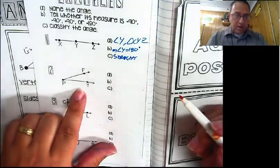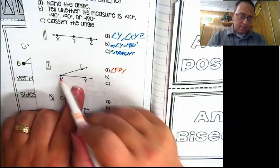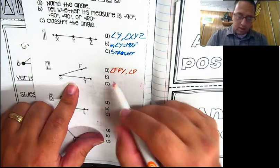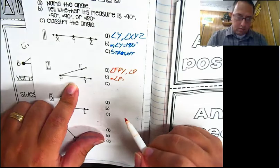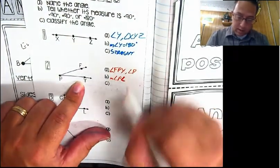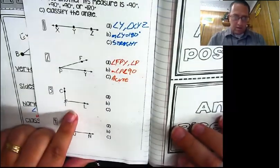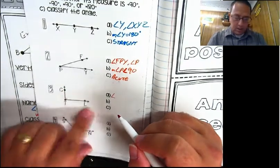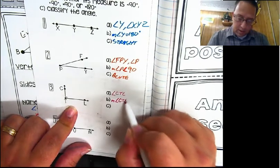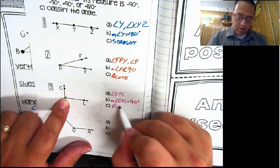Number 2: I could name this angle FPY - one side, vertex, other side. I could also call it angle P, since that's the only angle there. The measure of angle P is clearly smaller than a right angle, so it is less than 90 degrees - making it an acute angle. Next: angle CTL, or since it's the only angle, angle C. It has the little box, so this exactly equals 90 degrees - it is a right angle.